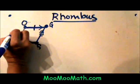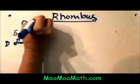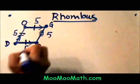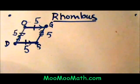So if this side is 5, this side is 5, this side is 5, and this side is 5. I call a rhombus a squished square.